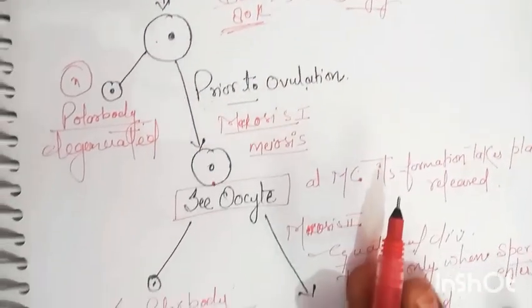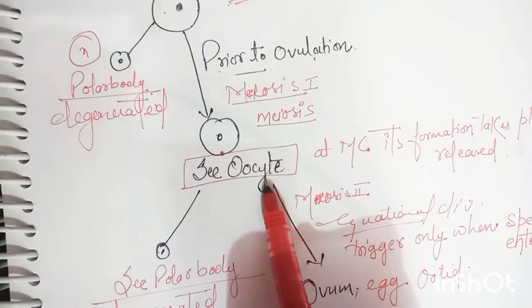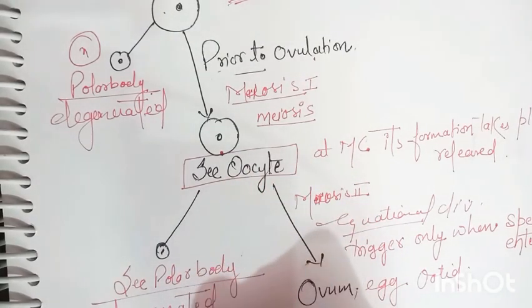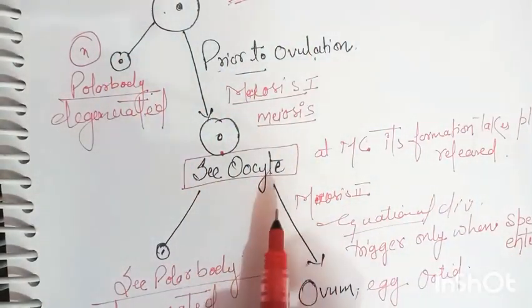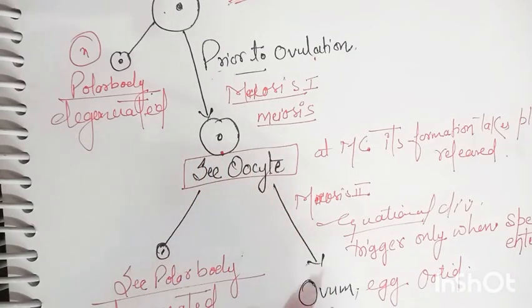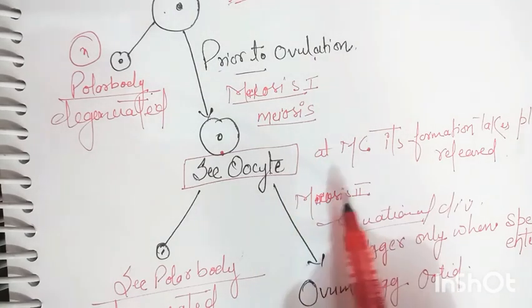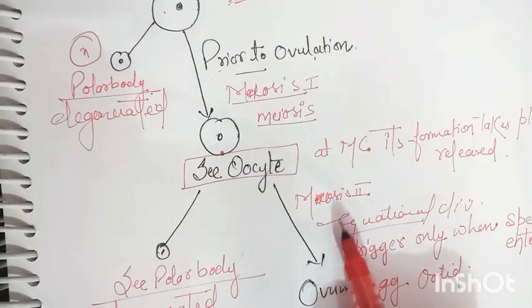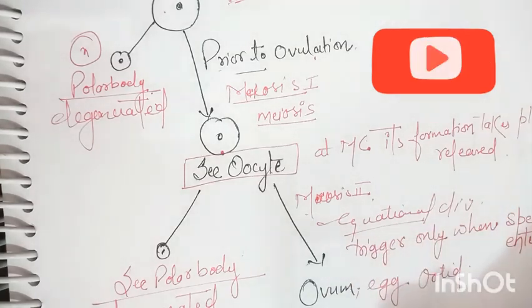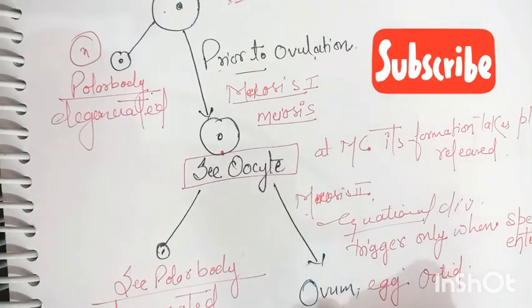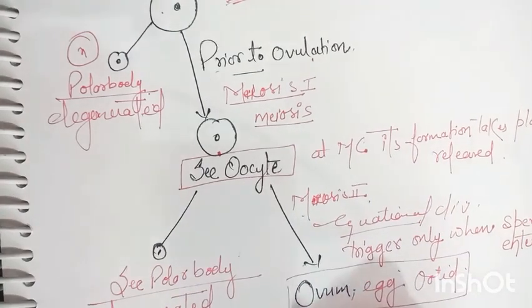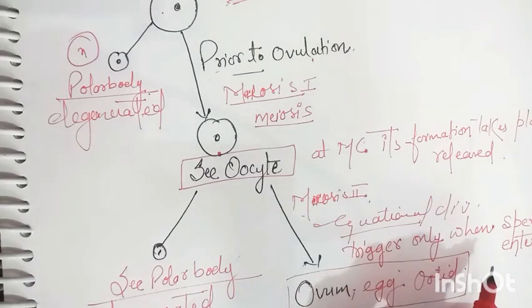After secondary oocyte and the secondary polar body is degenerated, secondary oocyte will convert into the ovum, egg, or ootid, which is the result of the second meiosis, which is an equational division. And it triggers only when the sperm enters. This is how oogenesis process takes place inside the female.